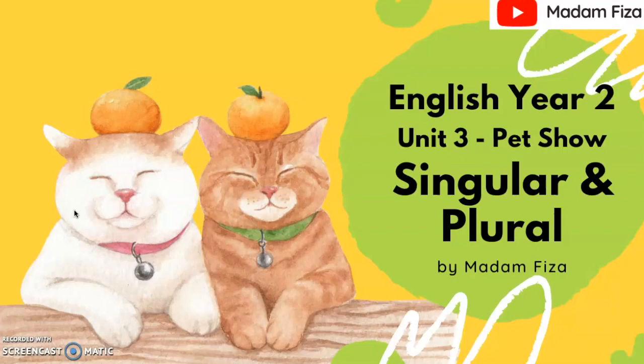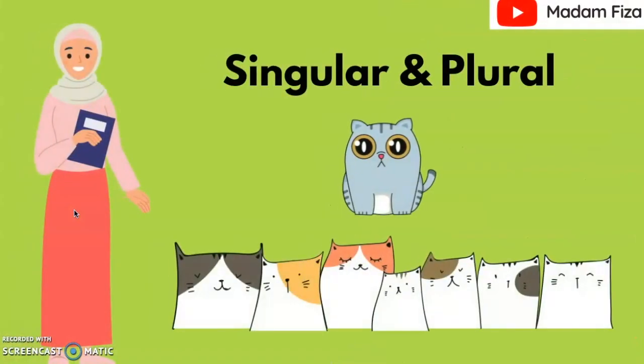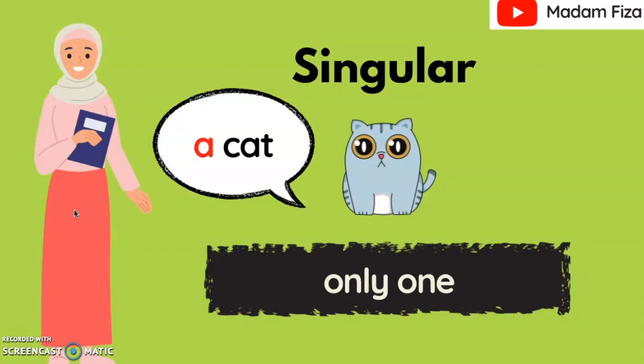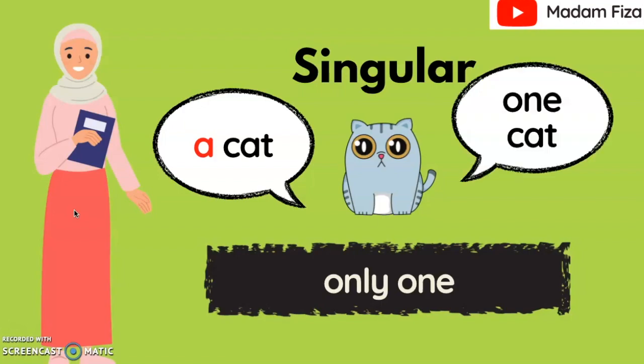What does it mean by singular and plural? Singular refers to only one. Look at the cat. We can use 'a cat' because 'a' refers to one — seekor kucing. Or we can also say 'one cat'.